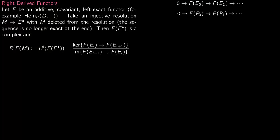Let us now talk about right derived functors. You start with a functor F — say F is some additive, covariant, left exact functor. For example, you have a functor like Hom(D, -). This is a covariant functor.